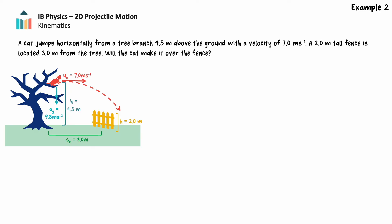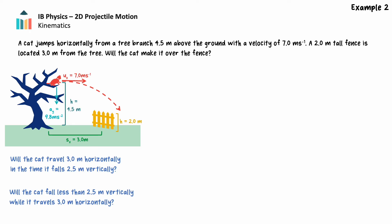We can frame the problem in one of two ways. First, we could consider if the cat will travel at least 3.0 meters horizontally in the time it falls 2.5 meters vertically — 2.5 meters being the change in height between the tree branch and the top of the fence. If the cat travels more than 3.0 meters in this time, it will make it over the fence; if less, it will not. Alternatively, we could consider if the cat will fall less than 2.5 meters vertically in the time it takes to travel 3.0 meters horizontally — if it falls less than 2.5 meters, it clears the fence; if more, it does not.